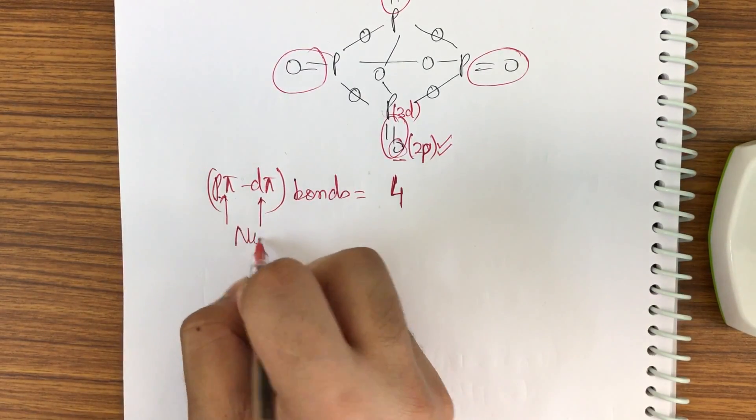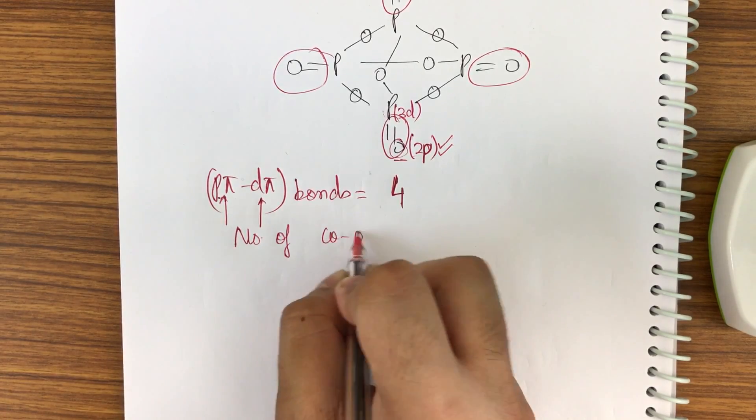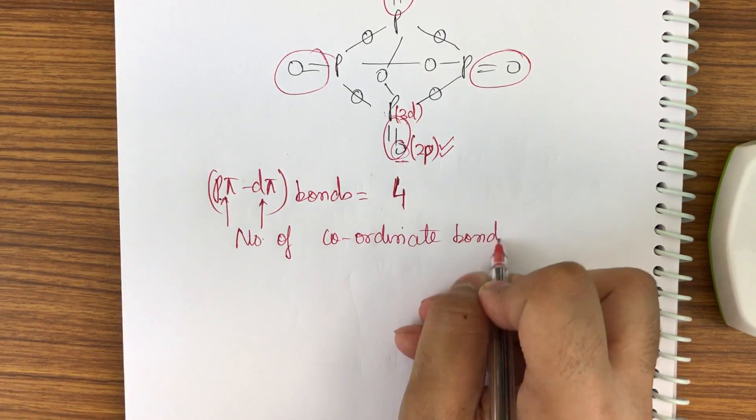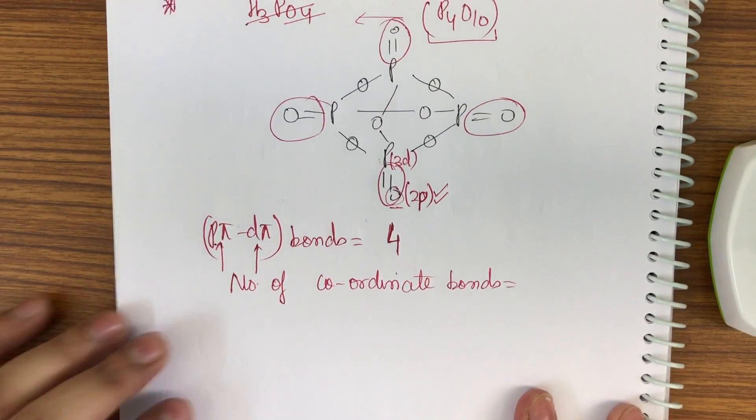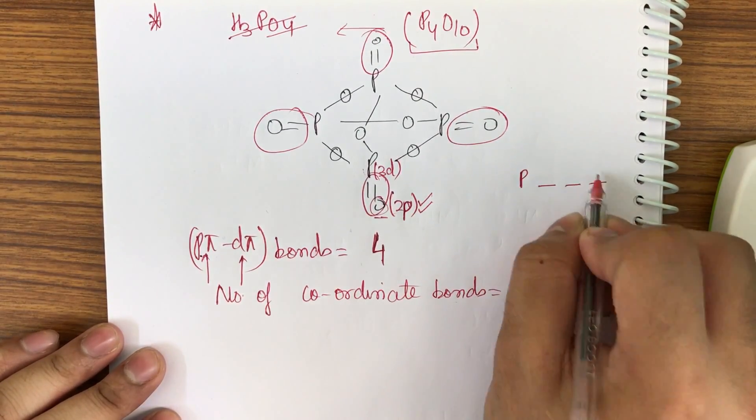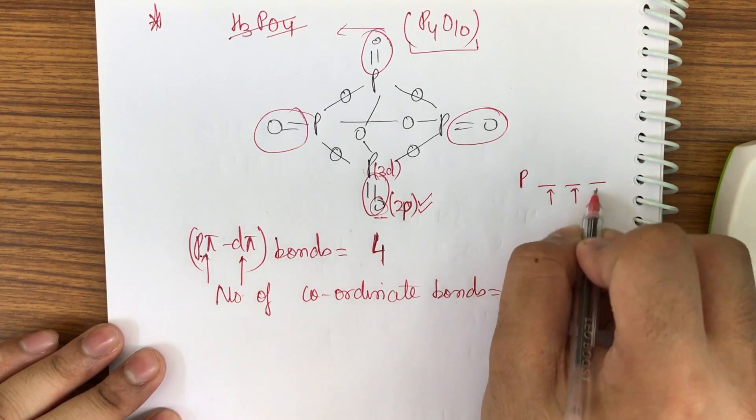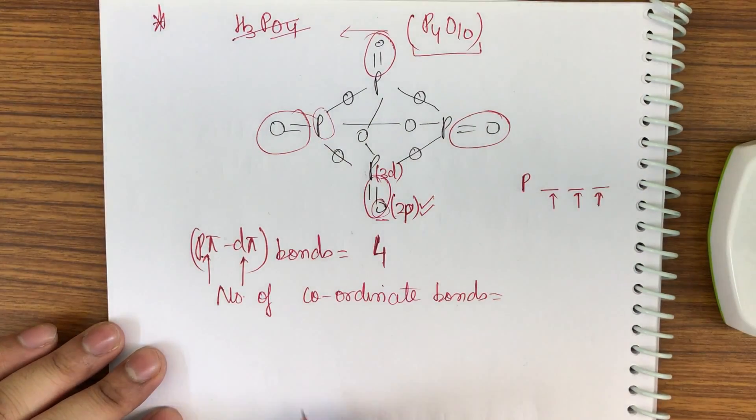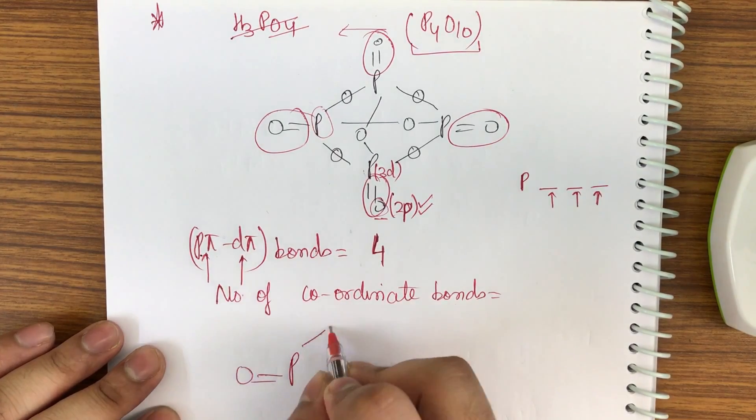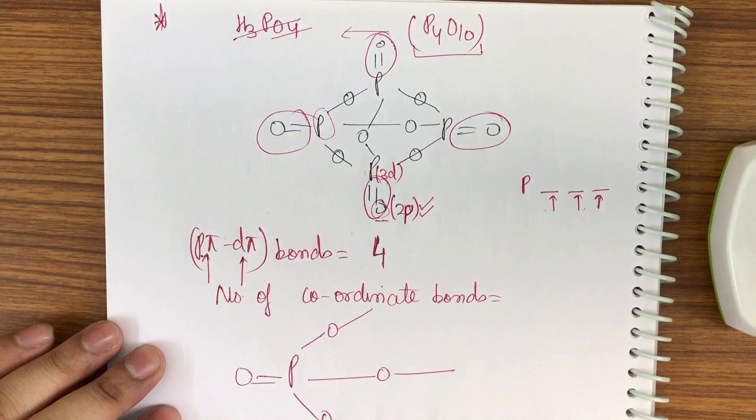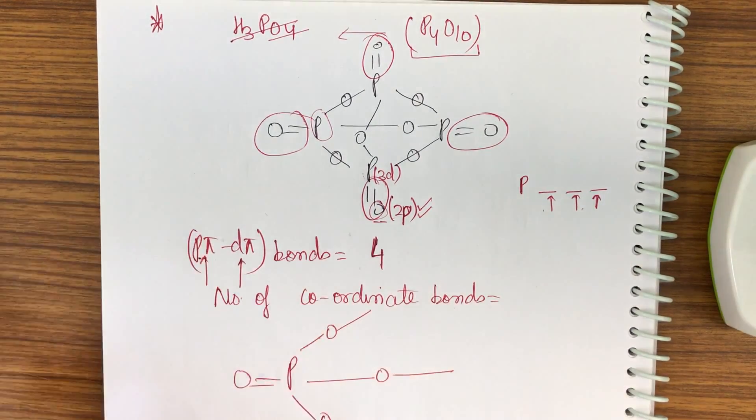Next case: number of coordinate bonds. I have to see that - phosphorus, it has to get 3 electrons for getting the noble gas configuration. Let me take this phosphorus as my basic case, so it is like this.